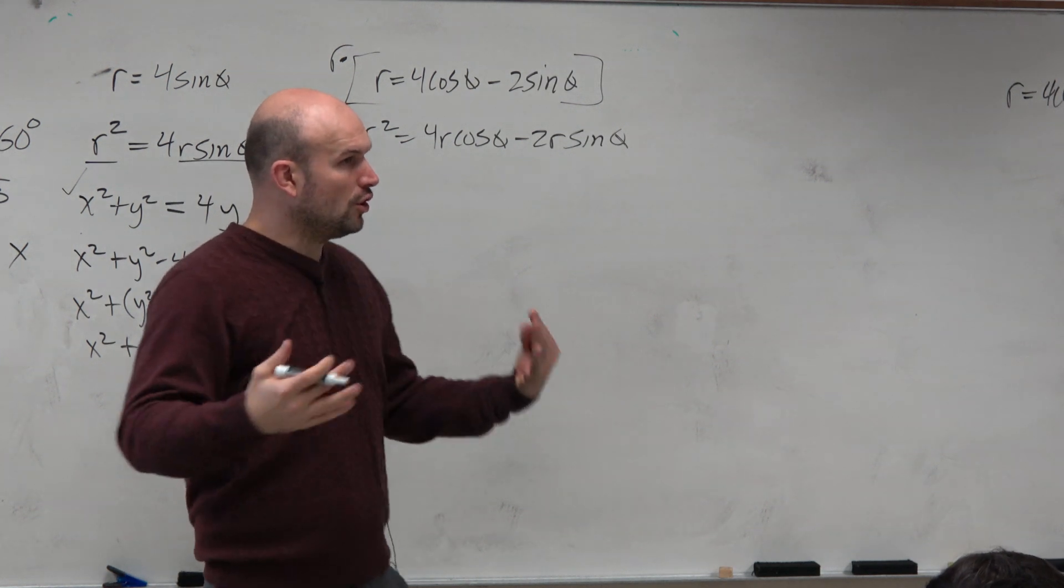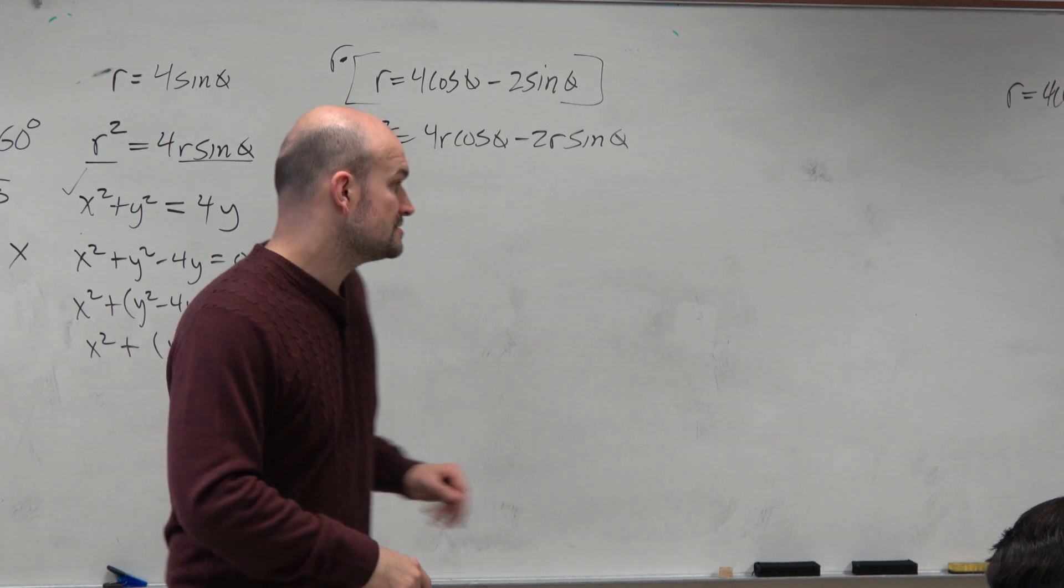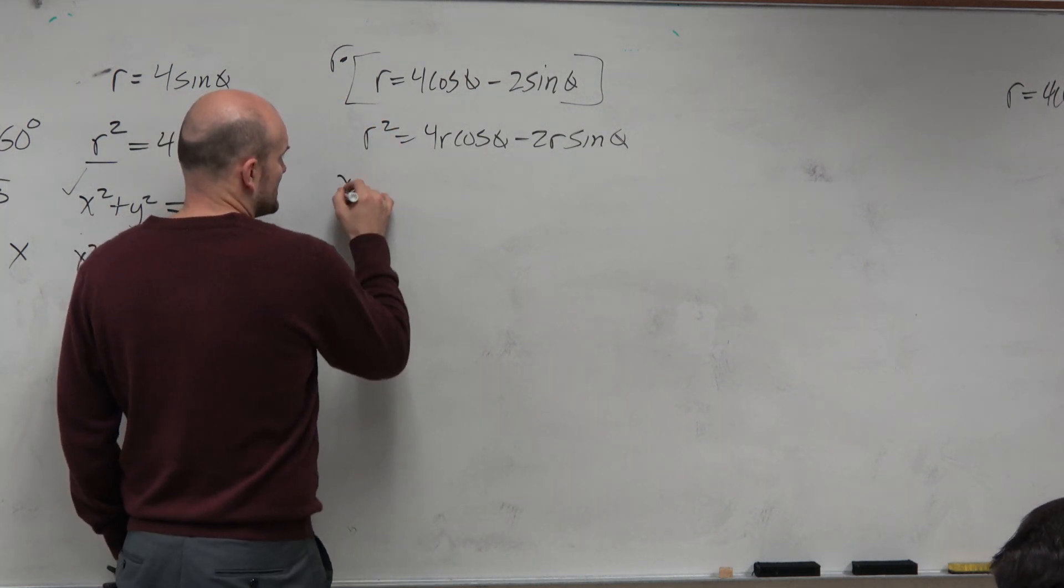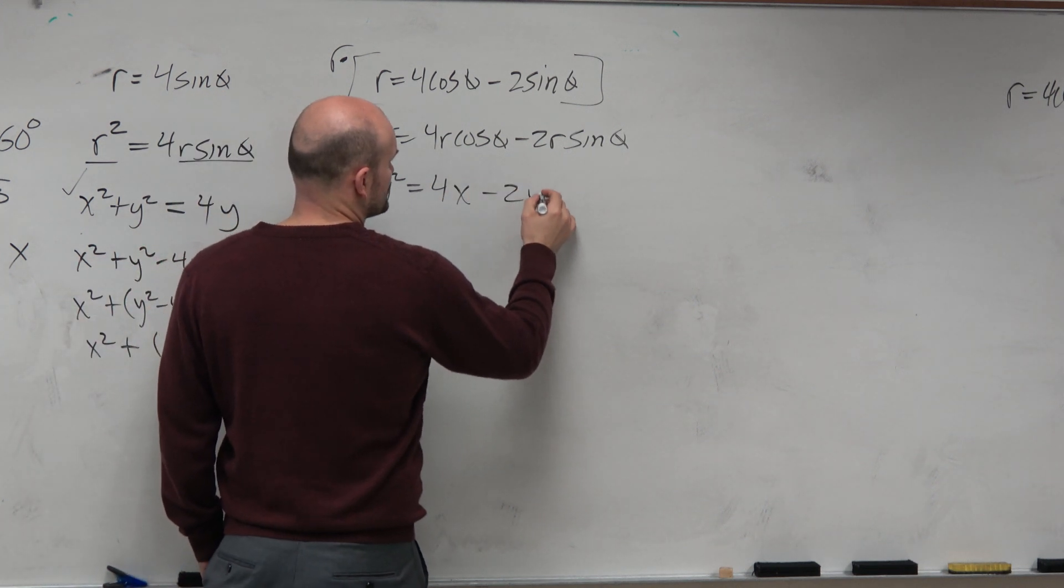Remember our goal is to write everything in terms of x's and y's. No thetas, no r's. So r squared is x squared plus y squared. Here we have x minus 2y.